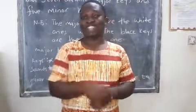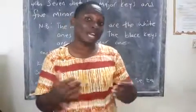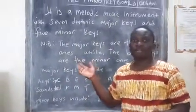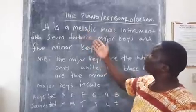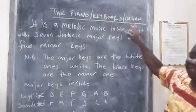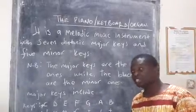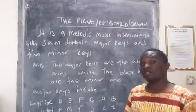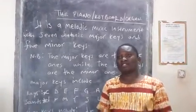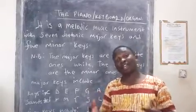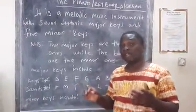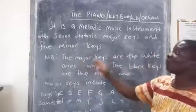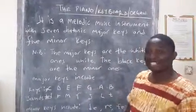First of all, we have to get to know what a keyboard, or what a piano, or what an organ is, in simple terms. What I've written here: the piano, or keyboard, or organ — it is the same music instrument. It is a melodic music instrument. The reason why we call it melodic is because it gives us a melody. We can use it to play different melodies, and it is played using keys. So it is a melodic music instrument with seven diatonic major keys.